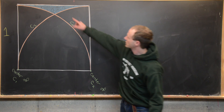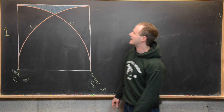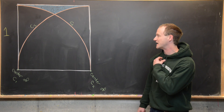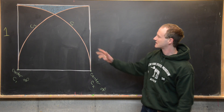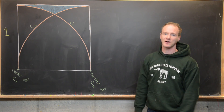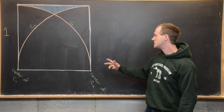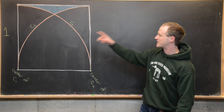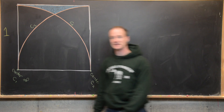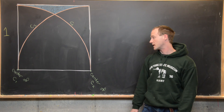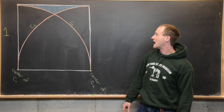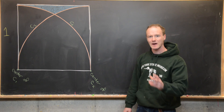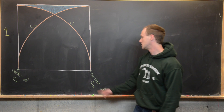We're going to find the area of this blue shaded region. This is going to be a square with side length one, and inside of that square we've got portions of two circles.